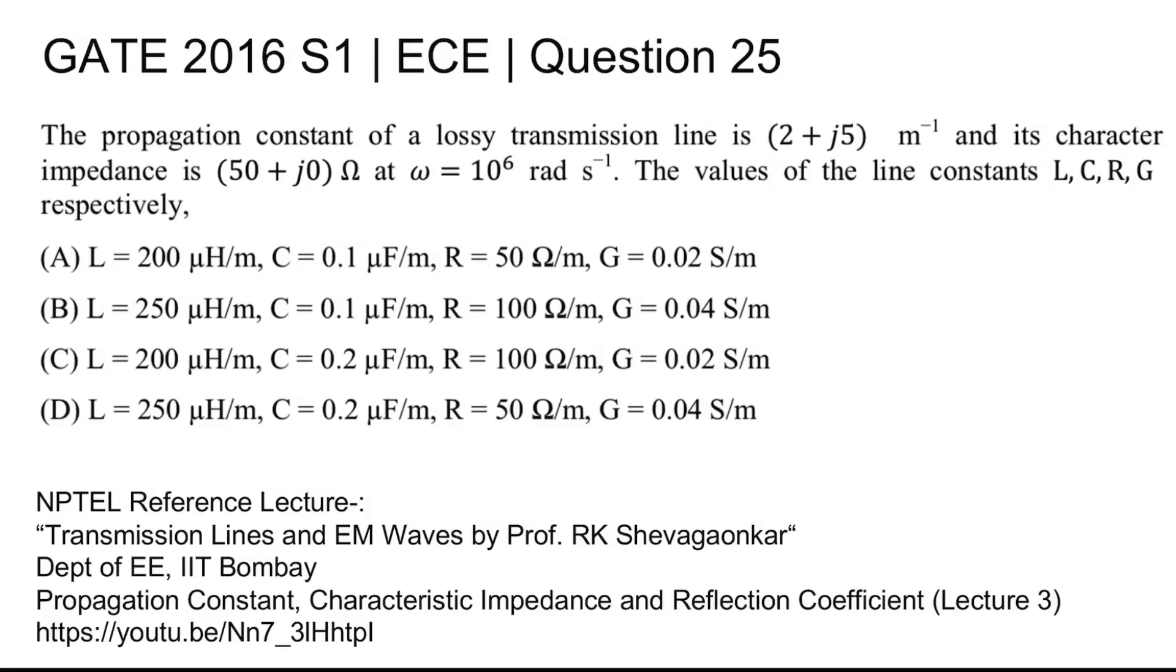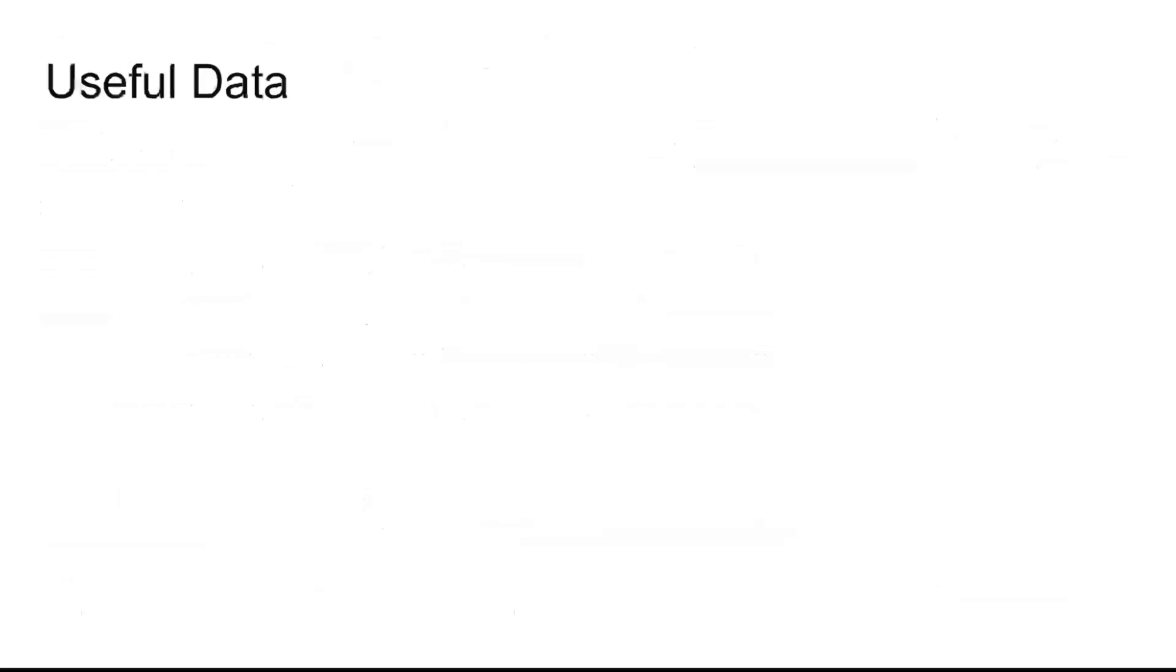In order to solve this question, you need to know some useful data. Propagation constant is α + jβ, having a real part and a complex part. This is attenuation and phase constant. For lossless line, R = G = 0.